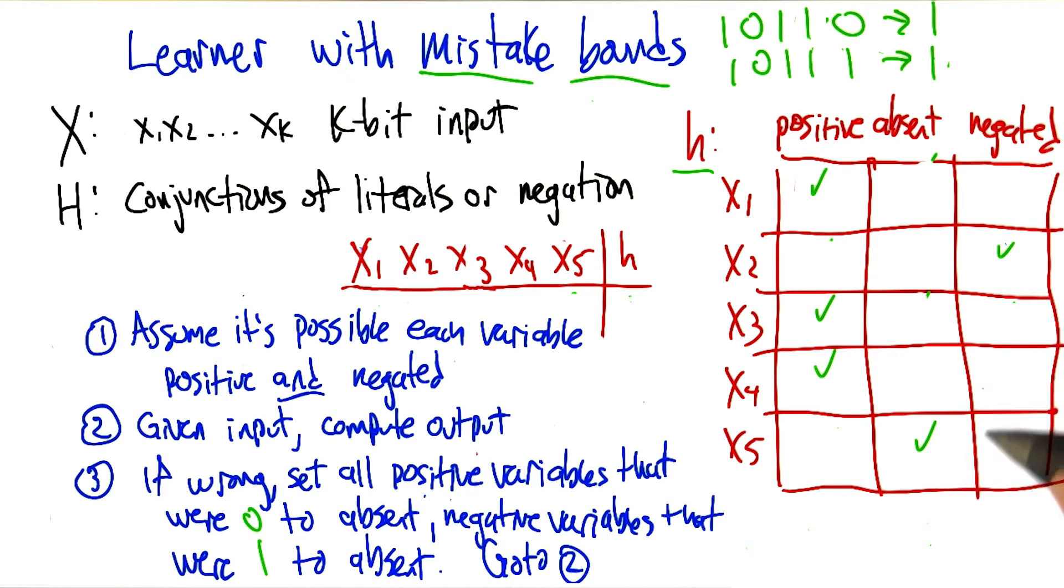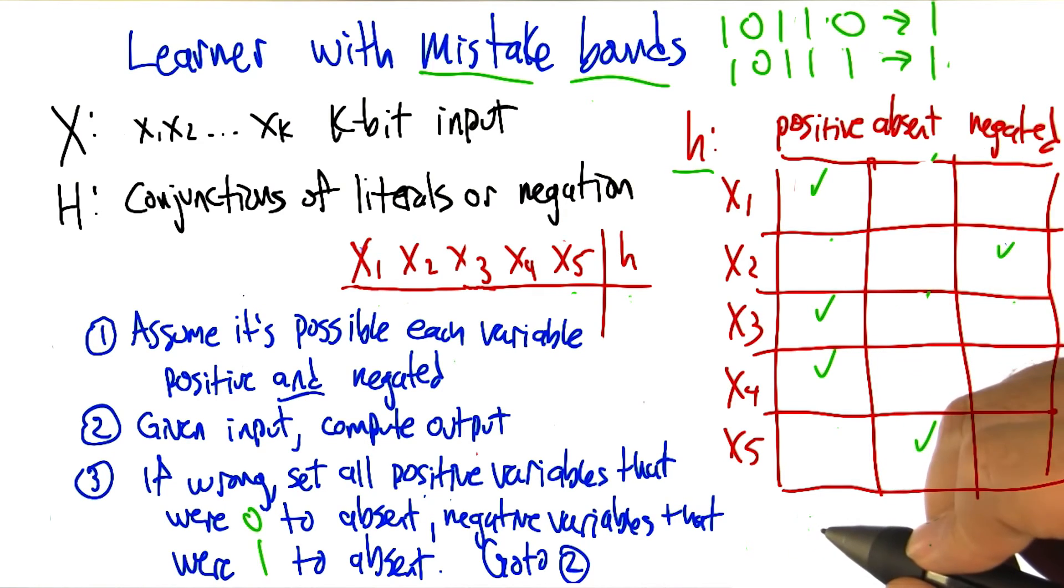So at most, we can move k things from negated or positive to absent. Oh. So if I think about it. Oh, so even if we may have to see, in fact, every, even if we may see an exponential number of examples, we will never make more than k plus 1 mistakes. Perfect.